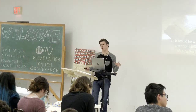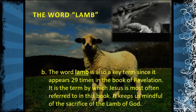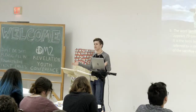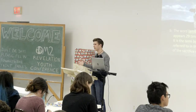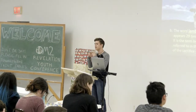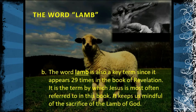Now let's go over other key terms you'll see throughout the book. The word lamb is a key term — it appears 29 times in the book of Revelation. It is the term by which Jesus is most often referred to in this book, keeping us mindful of the sacrifice of the Lamb of God. Some people say we shouldn't study Revelation because it takes away from Jesus Christ, noting that the name 'Jesus Christ' is not literally found in the book. But the entire book is about Jesus — he's referred to as the Lamb of God, mentioned 29 times.